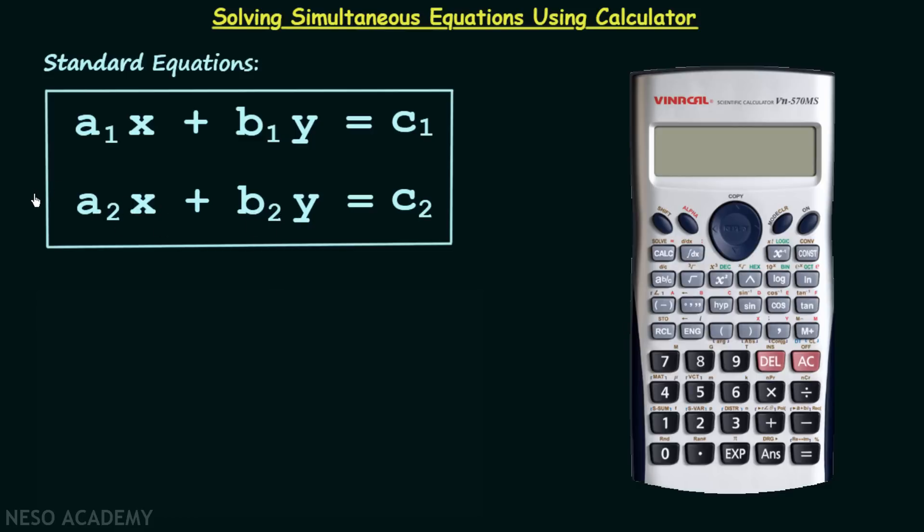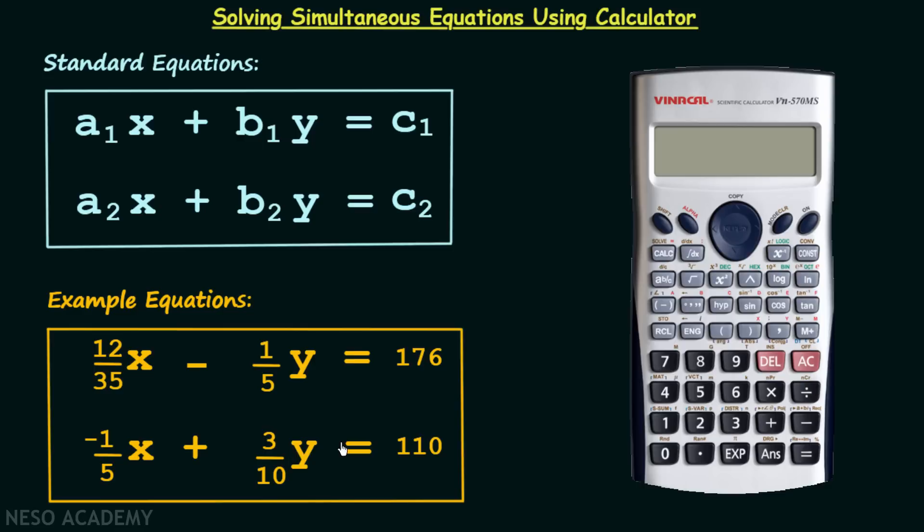Now in order to understand the process to calculate the values of x and y using the scientific calculator I have taken these two equations. In the first equation you can see that a₁ is equal to 12 over 35, b₁ is equal to minus 1 over 5, and c₁ is equal to 176.